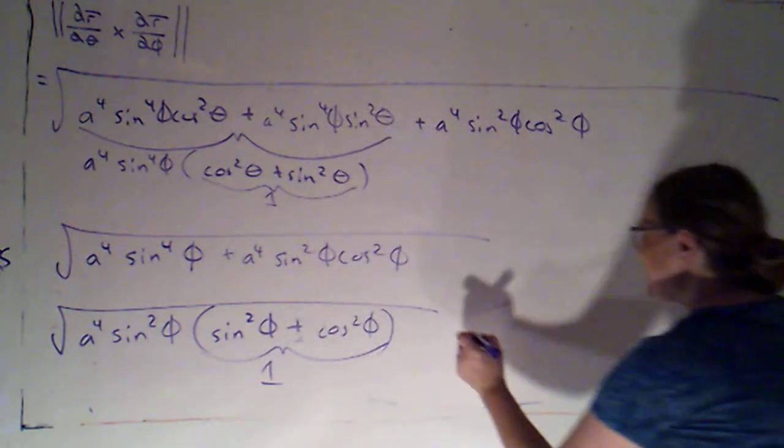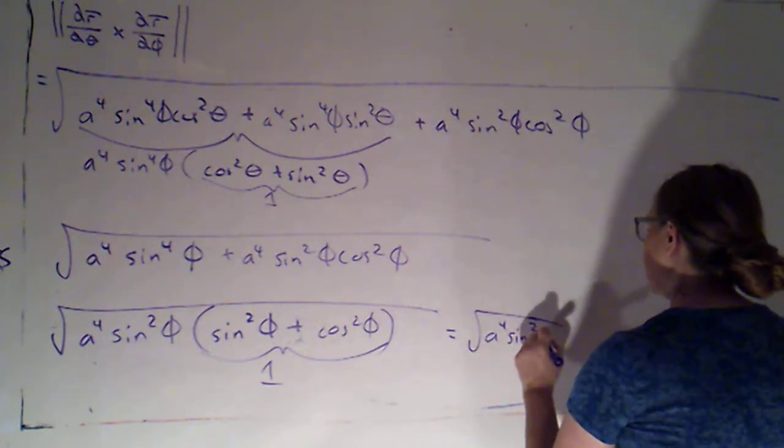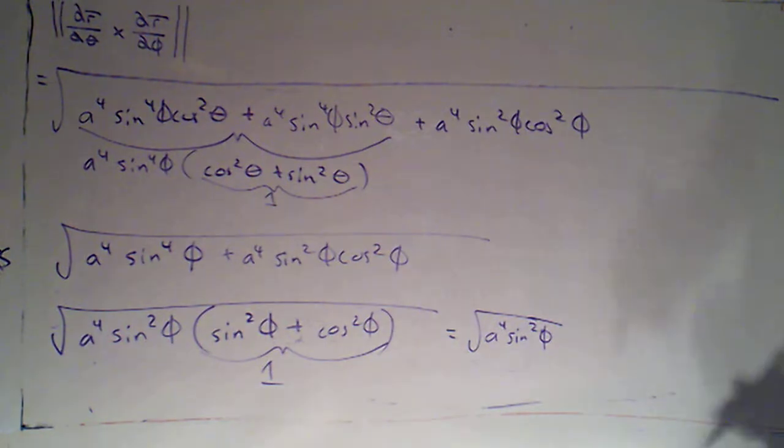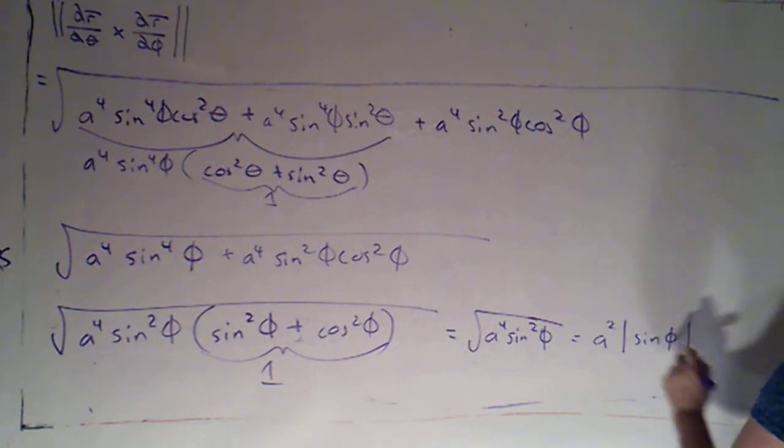So we've got the square root of a to the fourth times sine squared phi, which is going to be a squared times the absolute value of sine phi.